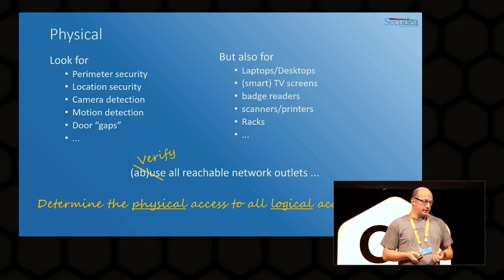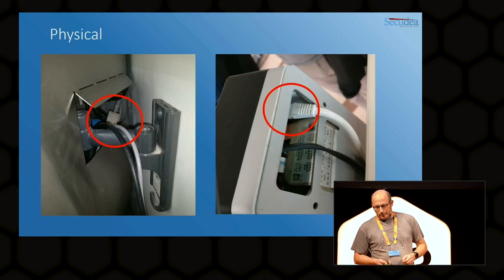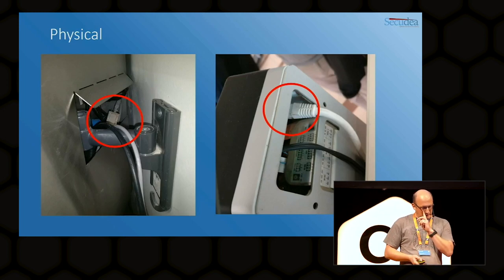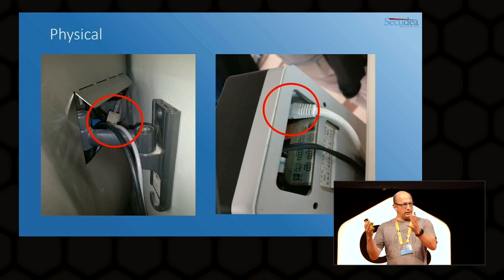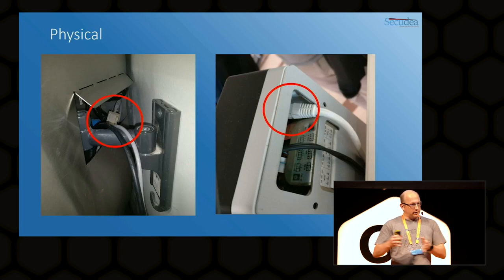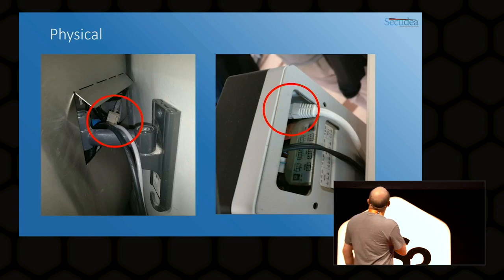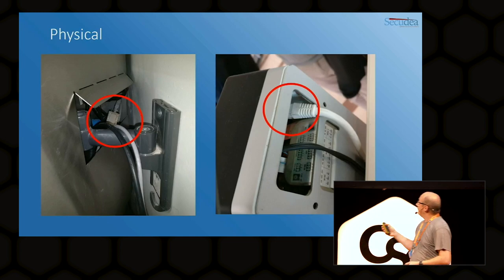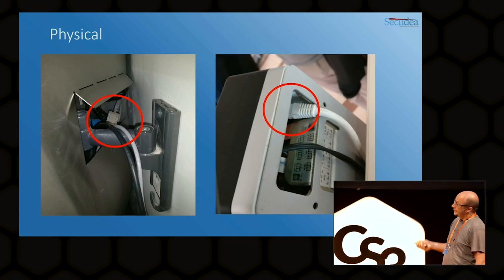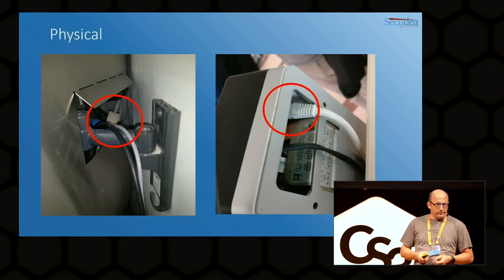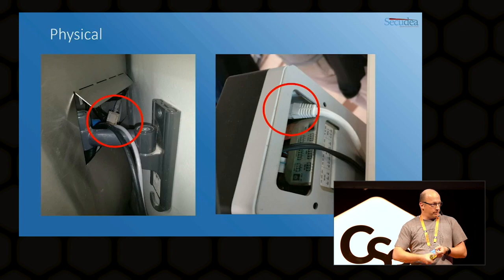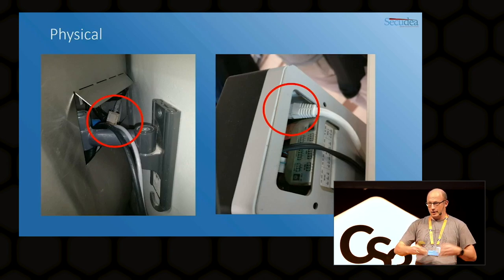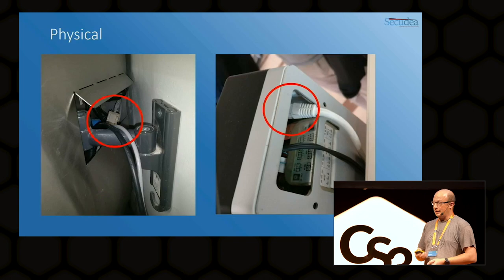We try to determine the physical access towards all the logical access paths. These are real pictures taken from one of my customers. The left one is a computer system with a completely metal case around it, but the thing can swing. At the back they had an arm with all cables going through a hole, and if you look closely you see a tiny Ethernet coupling device. Just disconnect it, put the pentest drop box in there, connect it, and you're good to go. That easy — nobody will notice.